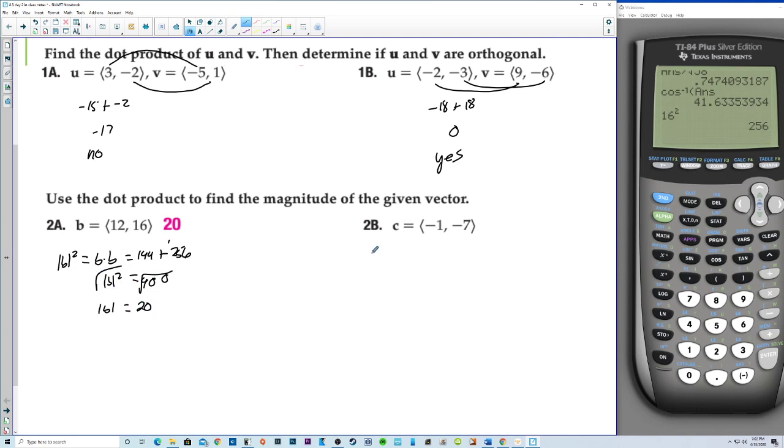How about this one? The magnitude of c squared is equal to c dot c. So that's 1 plus 49. That's 50. The magnitude of c is the square root of 50, which is 5 root 2, because 50 is 25 times 2.